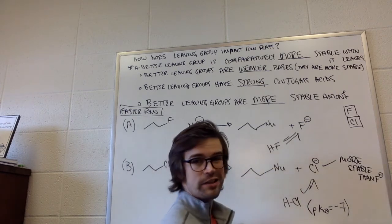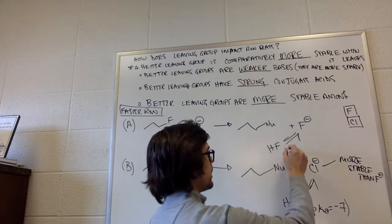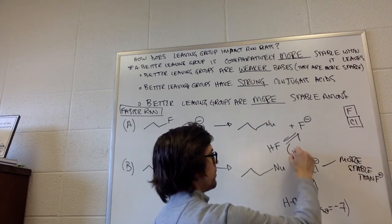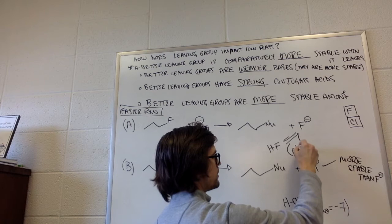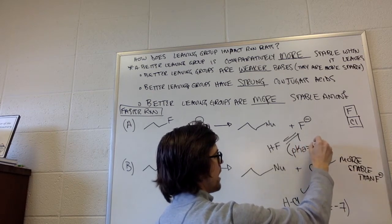So the problem here is HF. We don't actually know HF's pKa. HF's pKa is kind of an unknown. It's known in reality, but it's not on that table. The pKa of that is three.